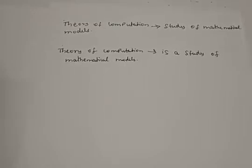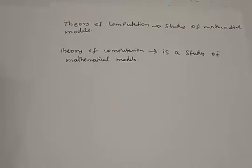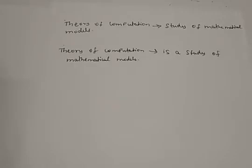A light operates on two different states called On and Off. Similarly, whenever you try to write something in your notebook, that can also be a Mathematical Model, because with your pen you can either write or you cannot write — those are the two states. Whenever there is an on or off operation, we say it is a Mathematical Model.